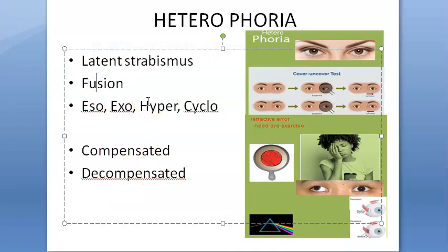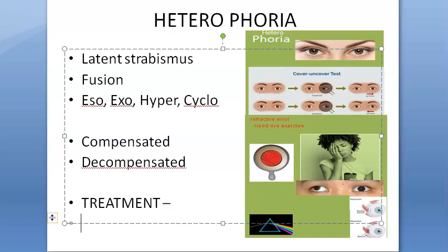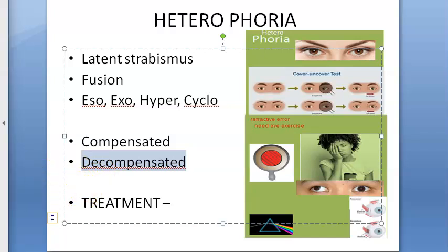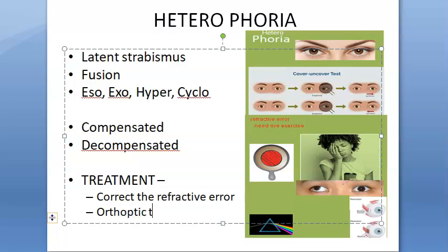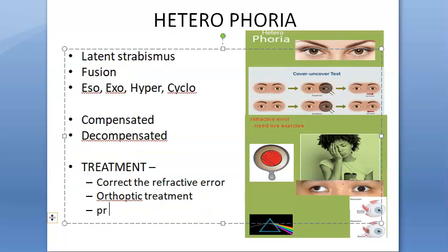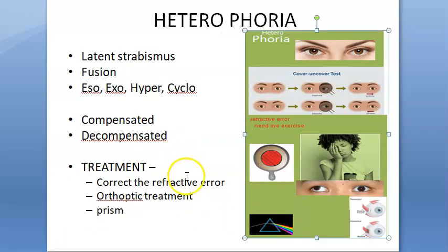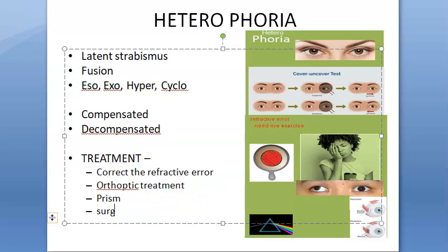Treatment is given to people who are decompensated and have symptoms. First, correct the refractive error. Then you can do orthoptic treatment — eye exercises. You can prescribe prisms in glasses for troublesome cases; only half or at most two-thirds of the heterophoria is corrected, not the whole amount. Surgical treatment is also an option if nothing else works.